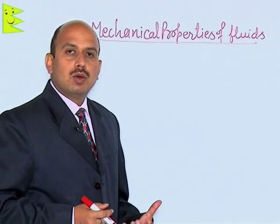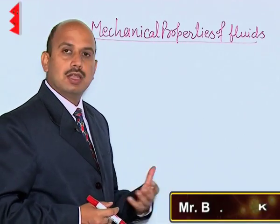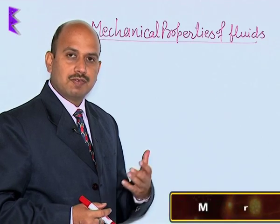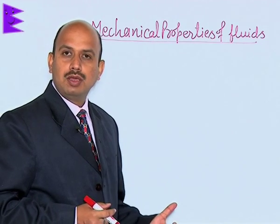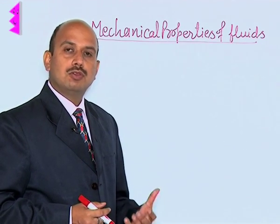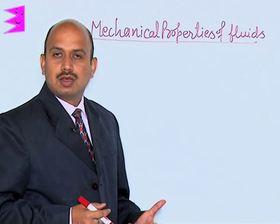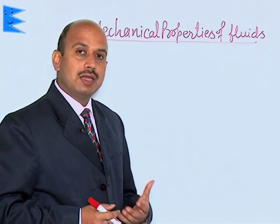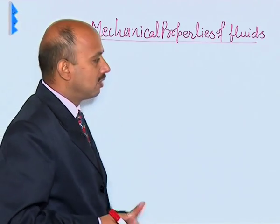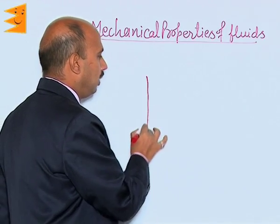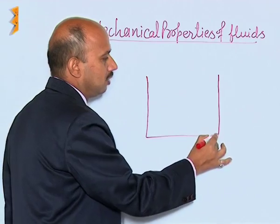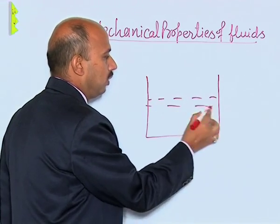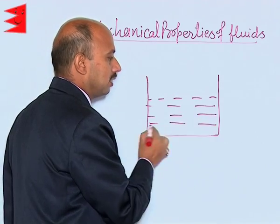When an object is submerged in a liquid at rest, the liquid exerts force on the surface of the body, and that force is always normal to the surface. We can understand this by taking an example. Suppose a liquid is in equilibrium and is taken in a vessel, and it is actually at rest.